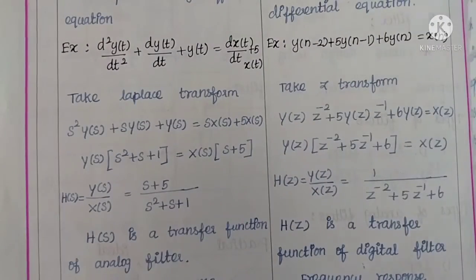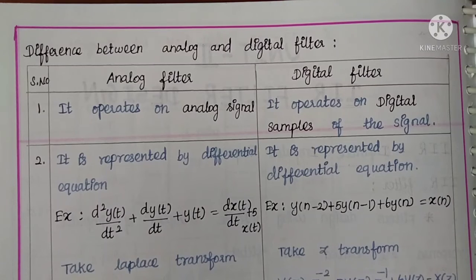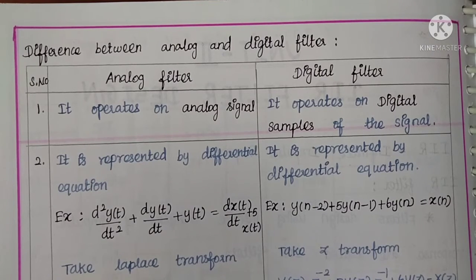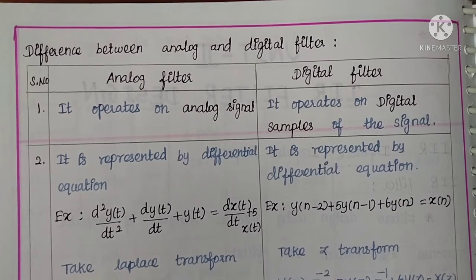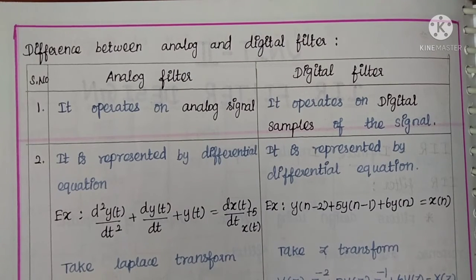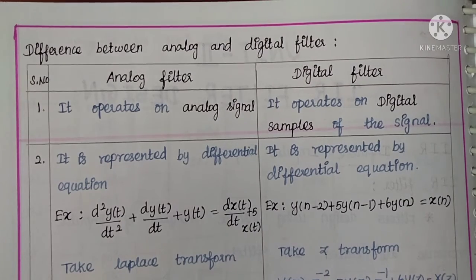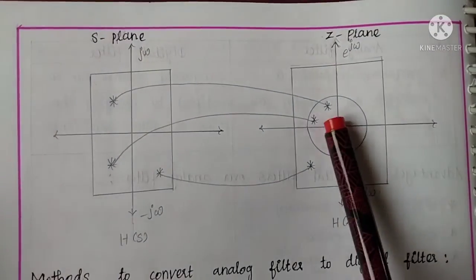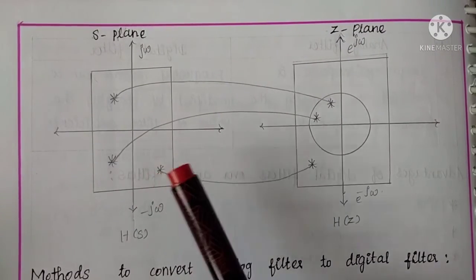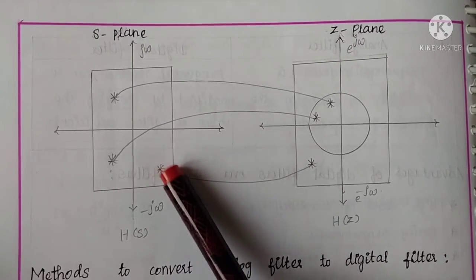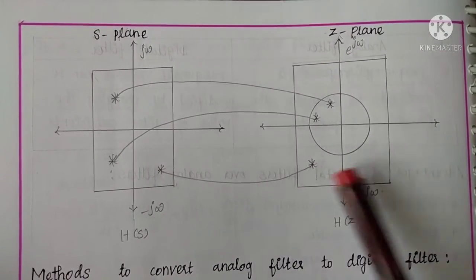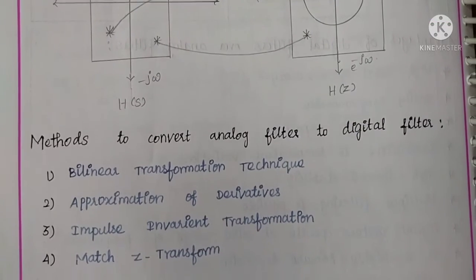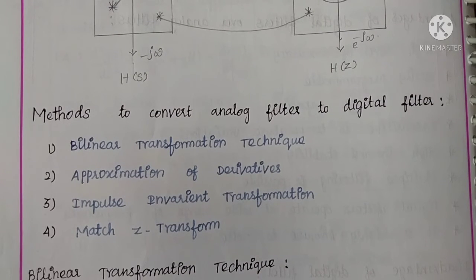In this video we saw differences between analog and digital filter — five points were covered. We also covered advantages of digital filter over analog filter, disadvantages of digital filter, and the properties to be maintained while transforming an analog filter to a digital filter. The left-side poles of the S-plane should be mapped inside the unit circle, and the right-side poles should be mapped outside the unit circle. We studied the names of the four methods to convert analog filter to digital filter, and will cover them in detail in the next video.